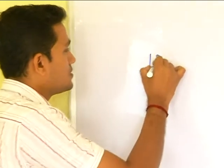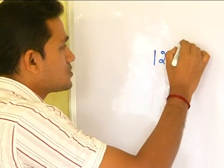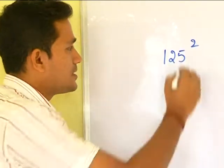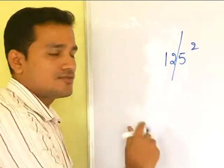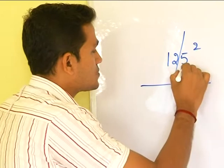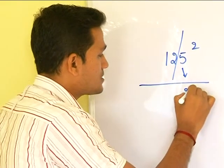Let's take 125. So, you want to obtain the square of 125. Break this number. You have 5 on the right side and 12 which is on the left side. So, obtain the square of 5 which becomes 25.